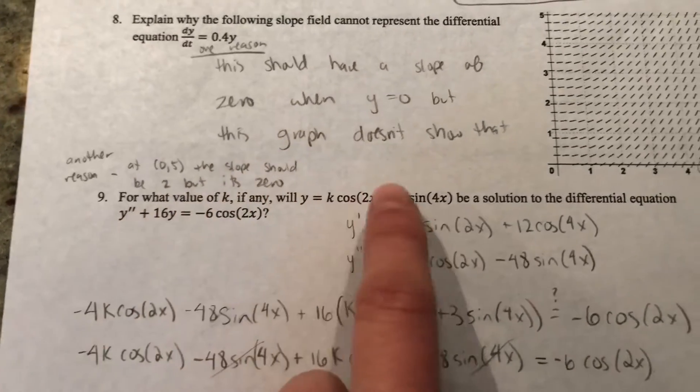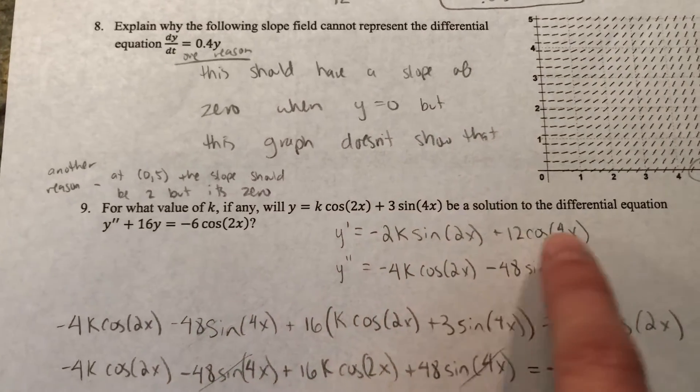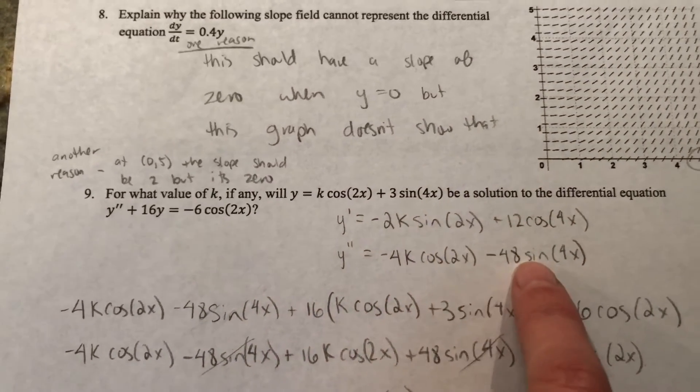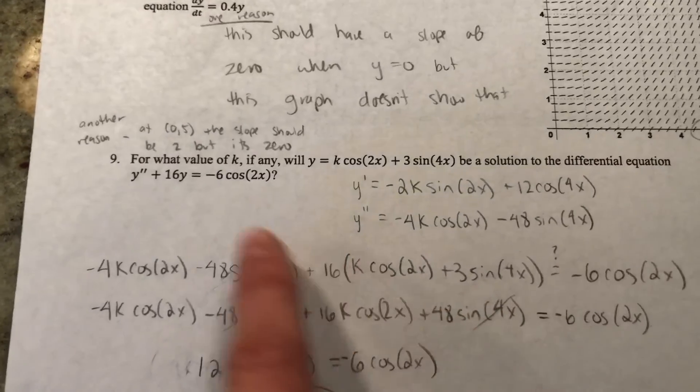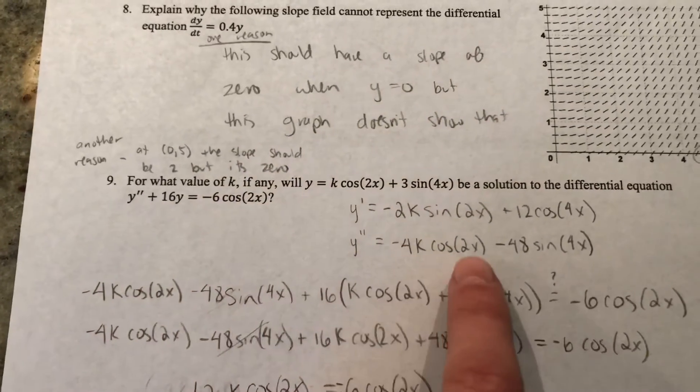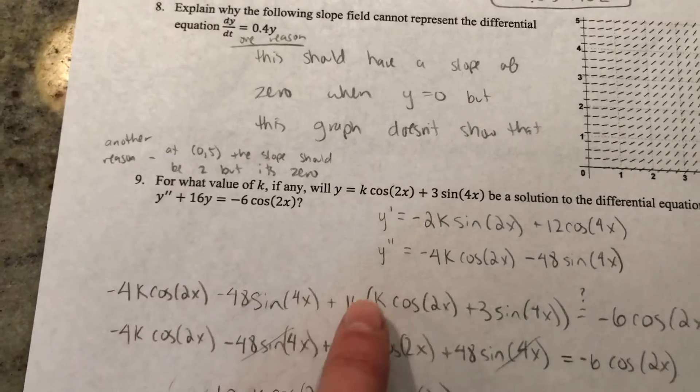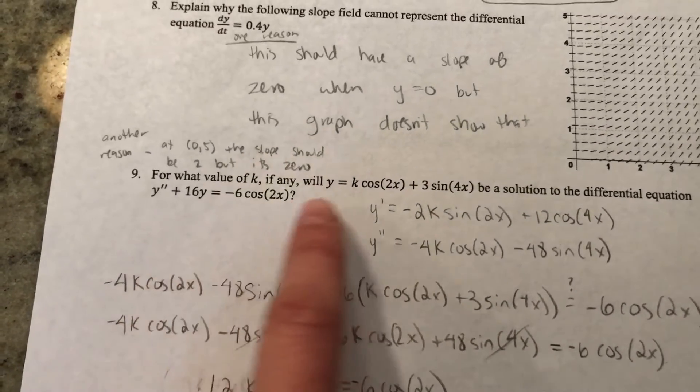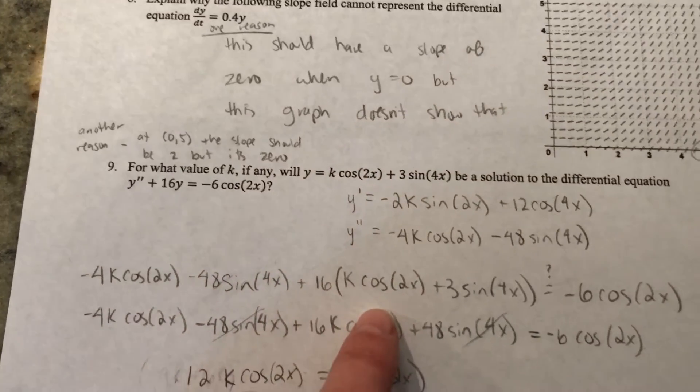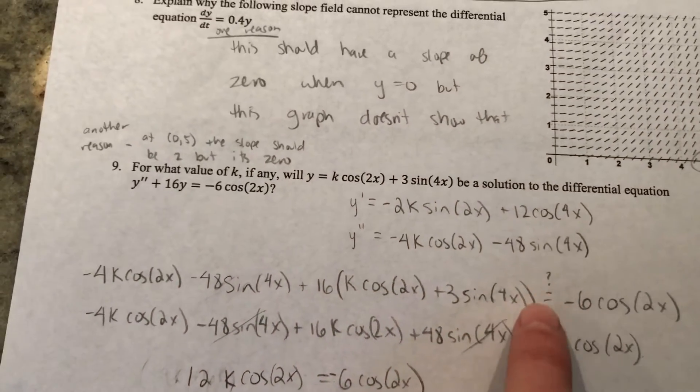This is me finding the first derivative and then the second derivative. Then I'm plugging the whole thing into this equation. I took y'' and that's just rewritten there, and then plus 16 times y. So y, that's just the original equation, and we're trying to make it equal to -6cos(2x).